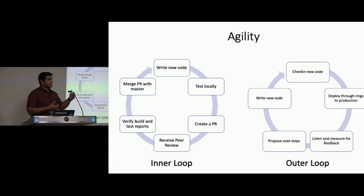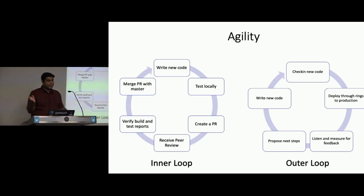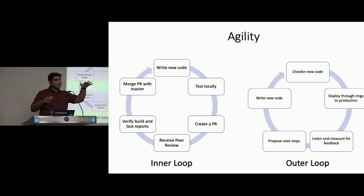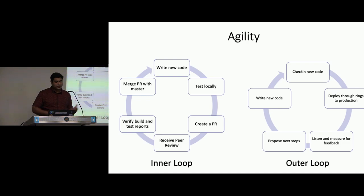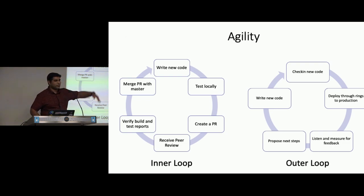In the inner loop, it's what a developer does every day: write code, test it, raise a pull request, someone reviews it, get it merged into the master branch. Once it's merged, you release to different rings in production, get feedback from users, add features, and write code again. This seems okay — it's doable.